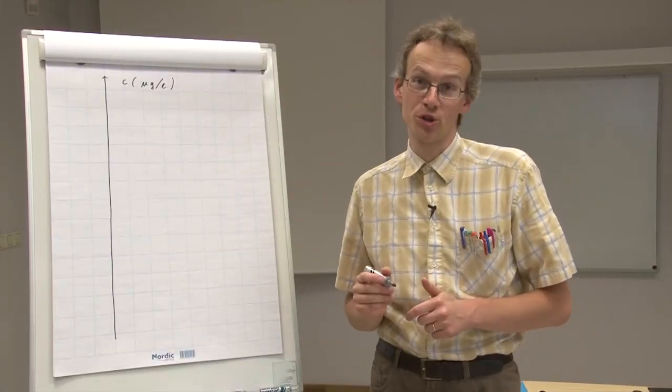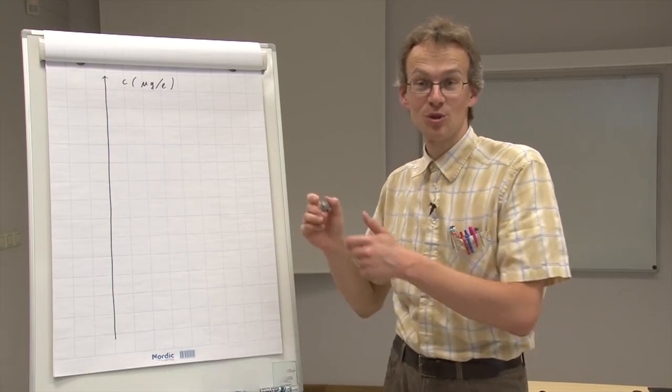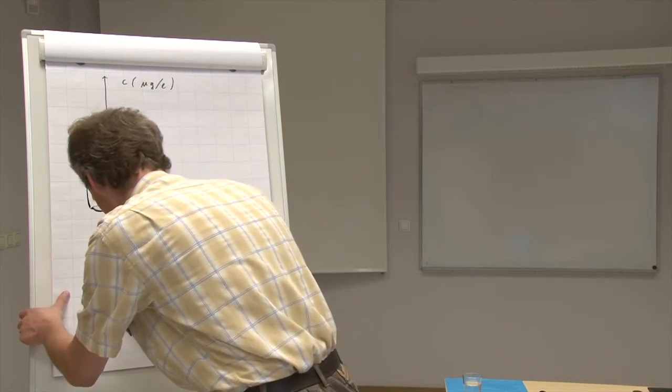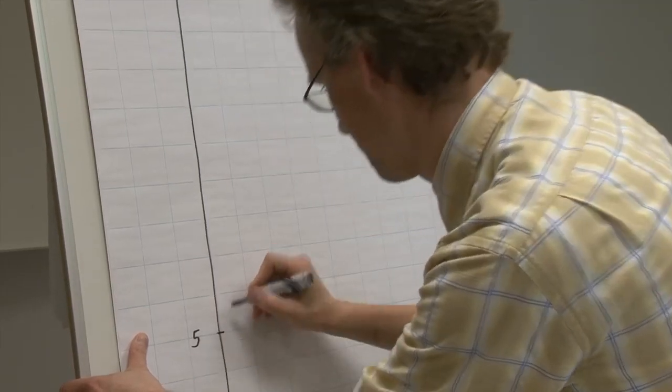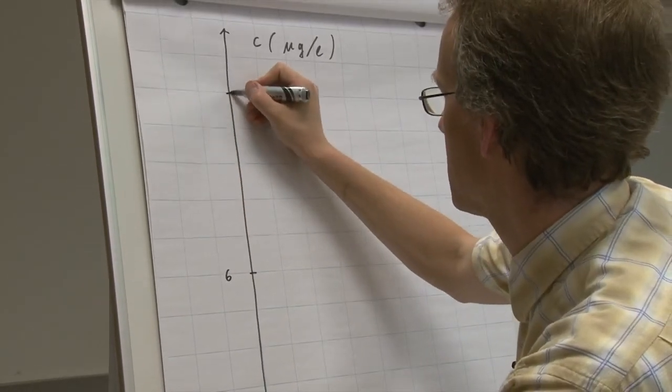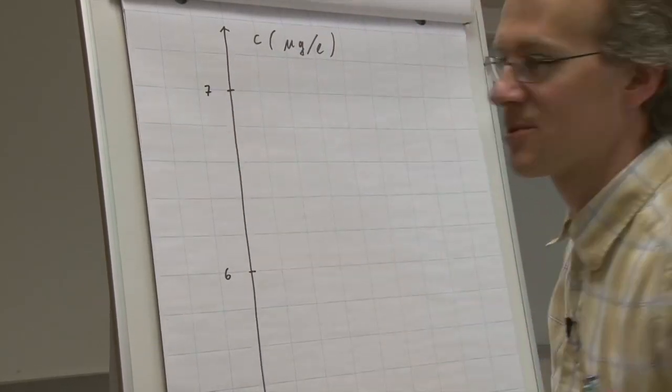And in order to make this example more concrete, let us also put some real concentration values on this axis. So this is 5, this is 6, and this is 7 micrograms per liter.